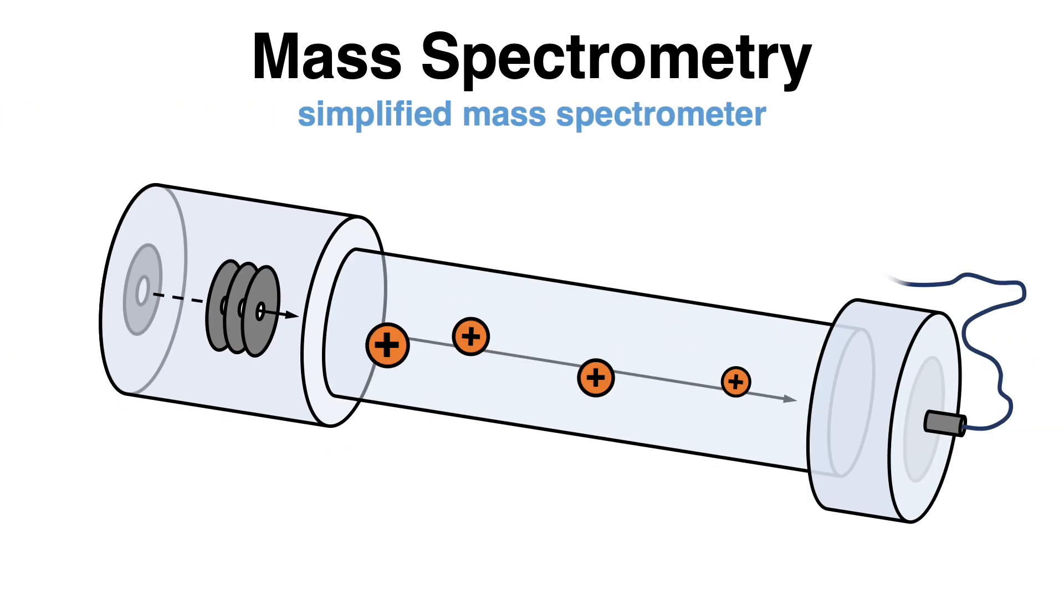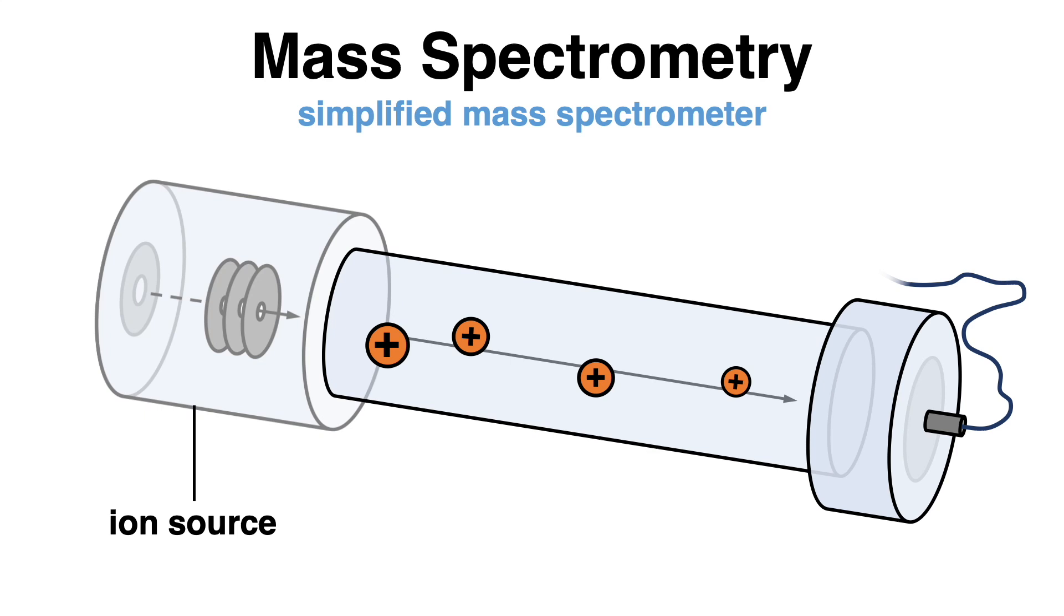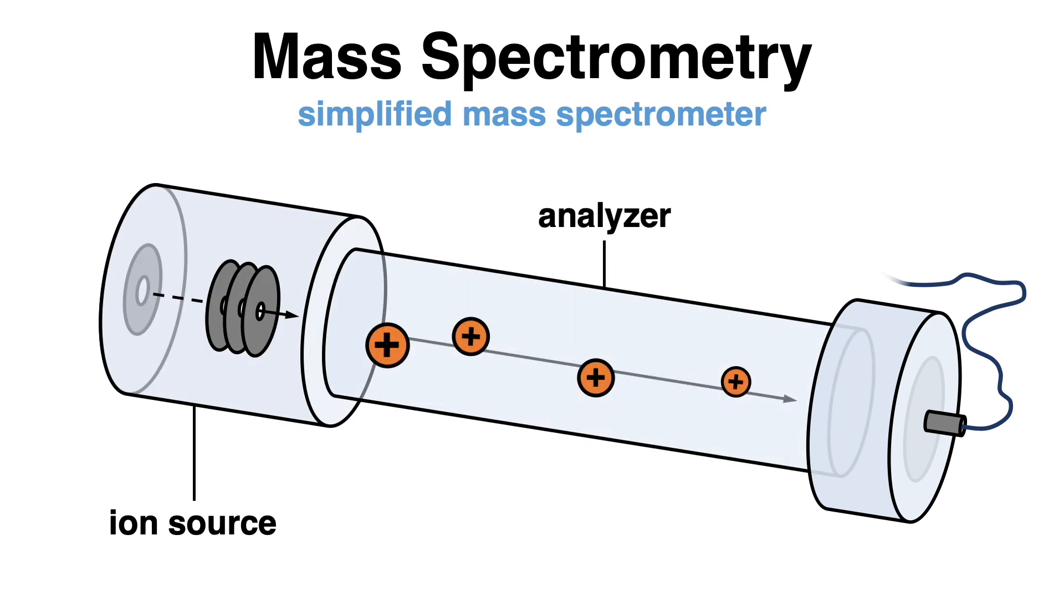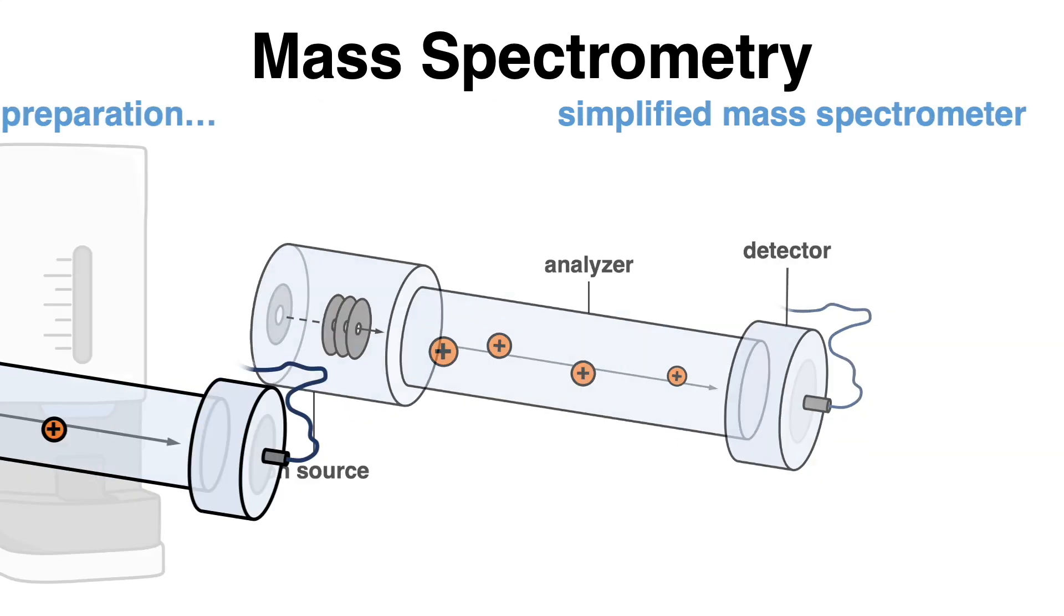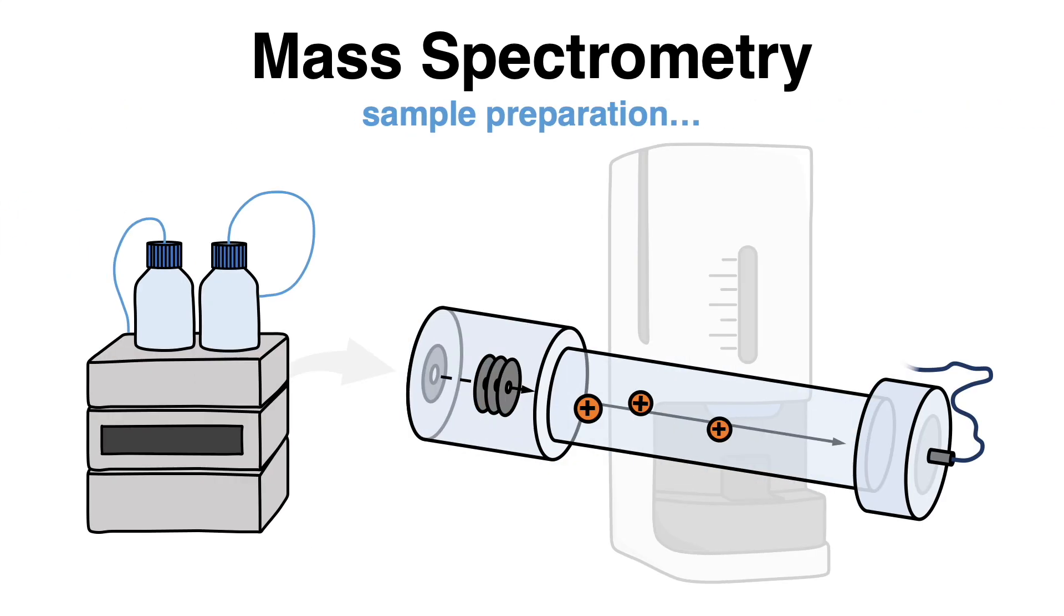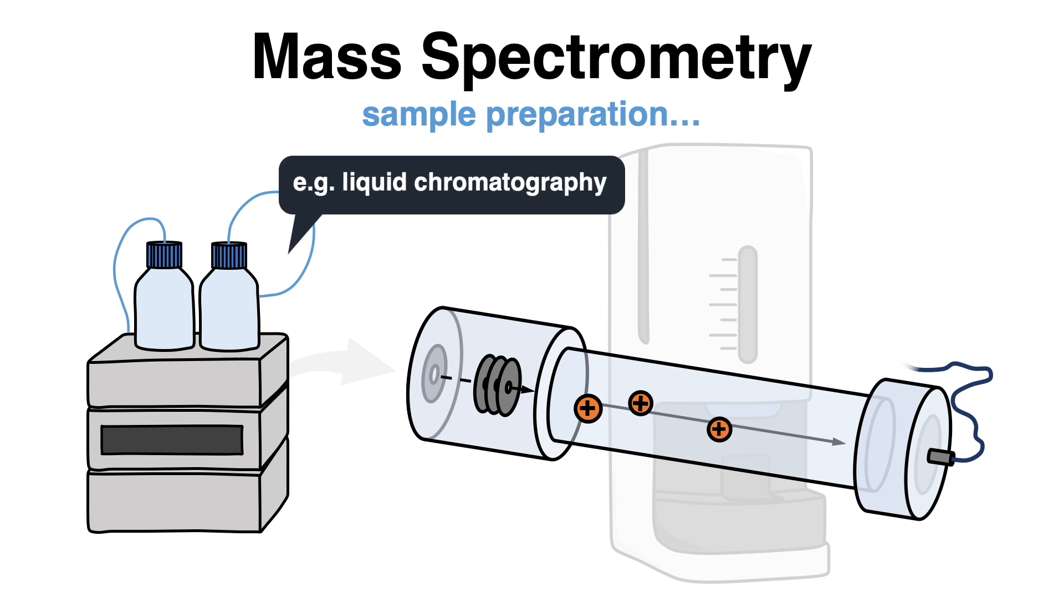Let's have a look at a simplified mass spectrometer consisting of an ion source, an analyzer, and a detector. Before being inserted into the mass analyzer, complex samples are often separated, for example, by liquid chromatography.